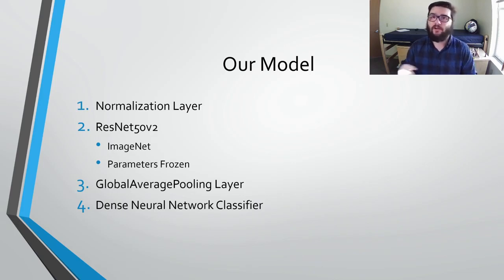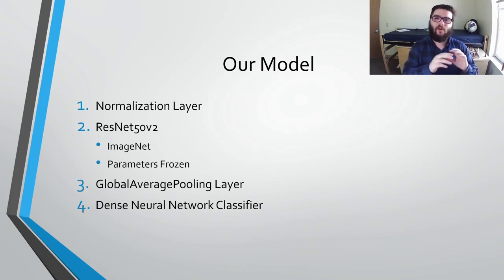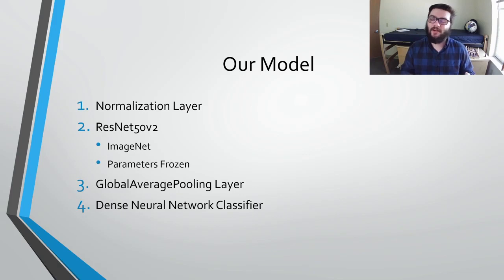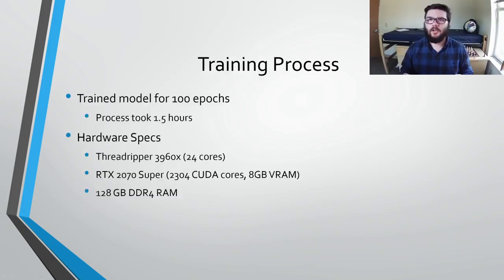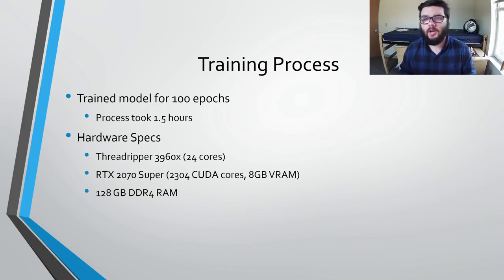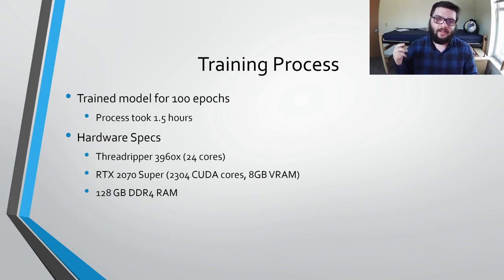After ResNet-50v2 output its final feature map, we applied a global average pooling layer that takes all of the features and, for each feature, converts all of the pixels into one average value. This makes it very easy for the dense neural network to tell if a feature exists in that image. Our final piece was a dense neural network classifier that made the final prediction on whether the input image contained COVID or was simply a normal CT scan. Each model went through exactly 100 epochs — iterating over all training images 100 times — which took about 1.5 hours on my personal machine using a Threadripper 3960X CPU, an RTX 2070 Super GPU, and 128GB of DDR4 RAM.